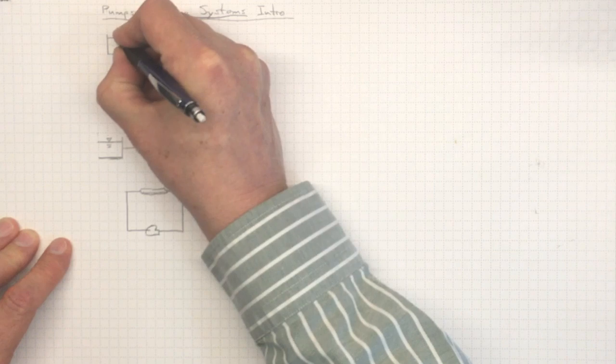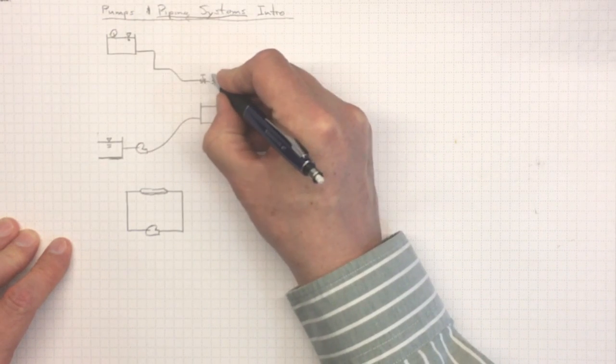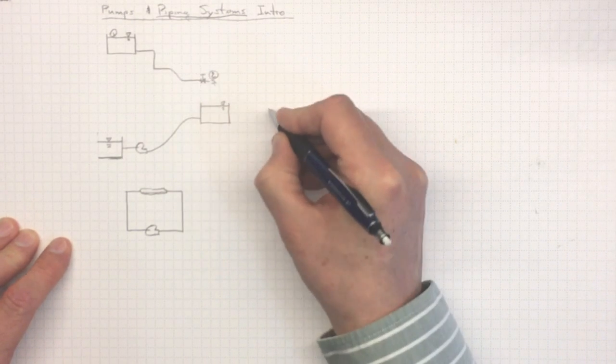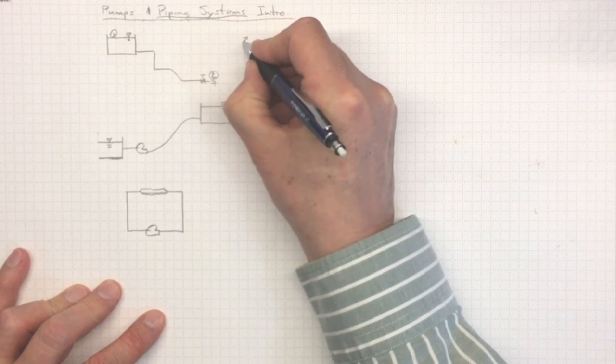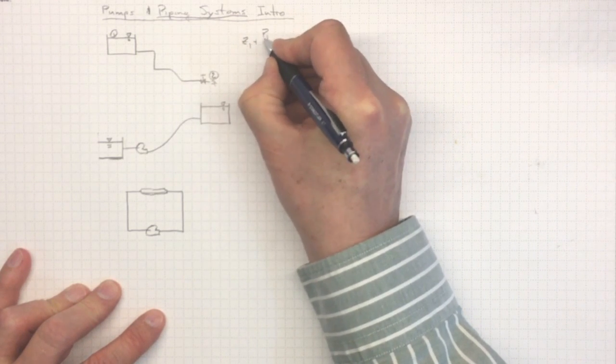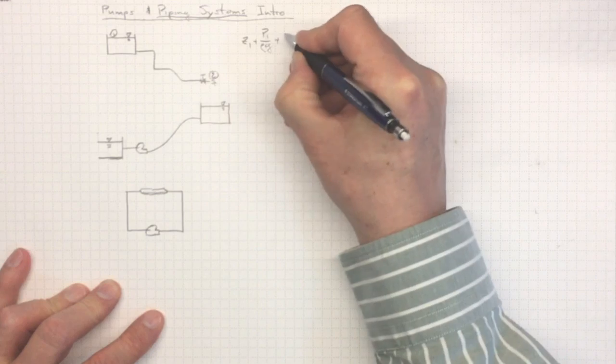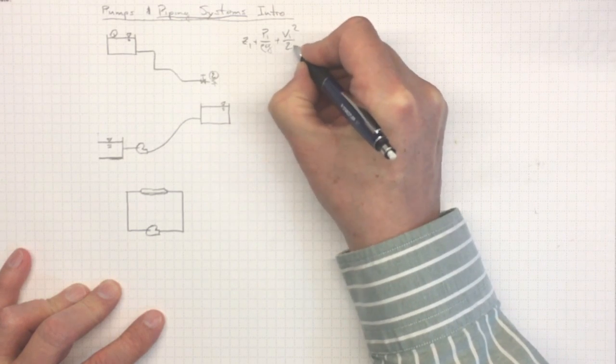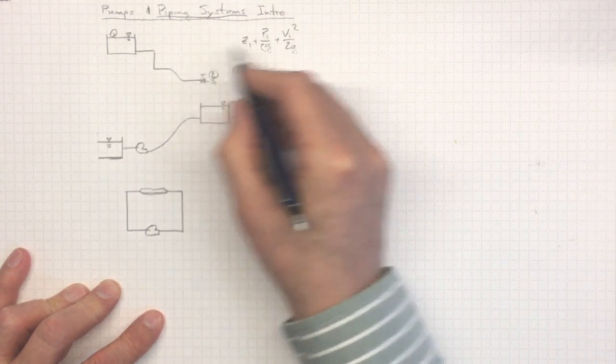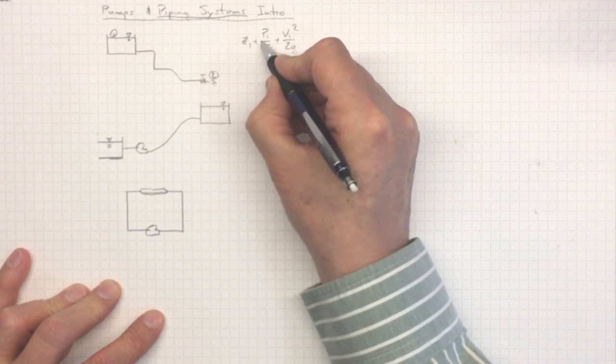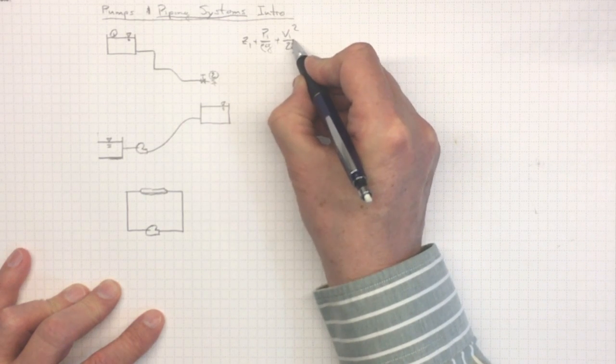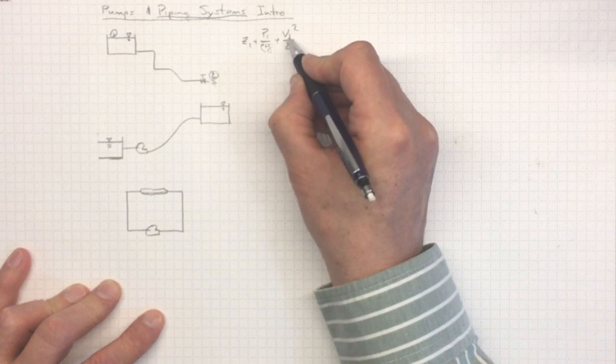In this one, remember we saw that we would pick two points of interest, usually two where it's easy to define the conditions. And we'd write Bernoulli's equation: Z1 plus P1 over rho g plus V1 squared over 2g. That's the total amount of energy that we had at location one. Potential energy due to elevation and pressure, and kinetic energy due to the velocity that the flow was moving at.